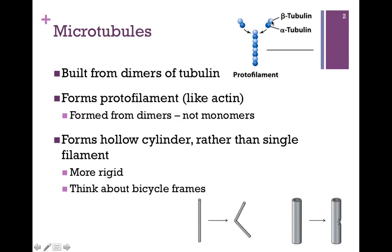There's an asymmetry that is always beta alpha, beta alpha. The second difference is that rather than a single filament, these assemble to form a cylinder. This makes it a very rigid structure, much stronger than the actin filaments, and that's important for its biological role, as we'll see a little bit later.